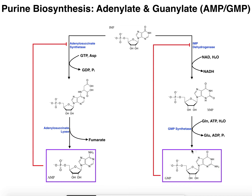Now let's look at the right-hand side and see how we get GMP. IMP is going to react with an enzyme called IMP dehydrogenase. What this enzyme is going to do is take this carbon of the six-membered ring and put a carbonyl right there. We're going to use NAD and water to do that, and we get out NADH. That gives us this carbonyl, and this nucleotide is called XMP. The nitrogenous base is called xanthine, so with a ribose it's called xanthosine, and the whole thing is xanthosine monophosphate, XMP.